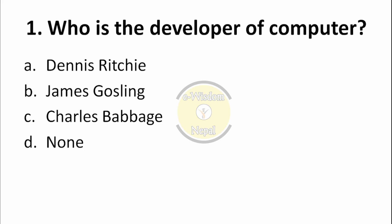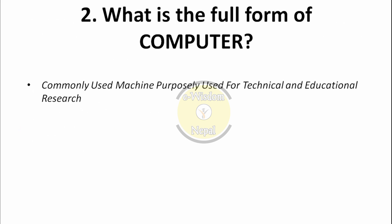Our first question: Who is the developer of computer? That is, who is the father of computer? You may have studied this in class 7-8. Options: Denis Ritchie, James Gosling, Charles Babbage, D-None. The correct answer is option C — Charles Babbage — the developer of the first computer, also called the father of computer.